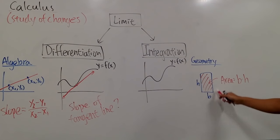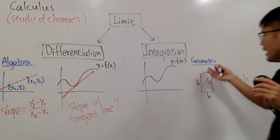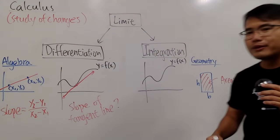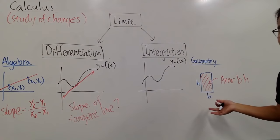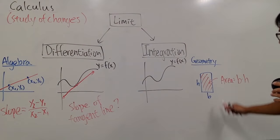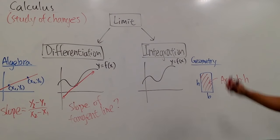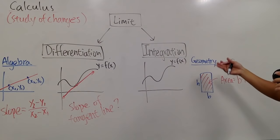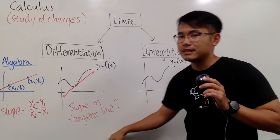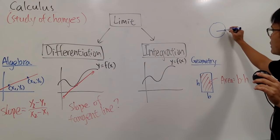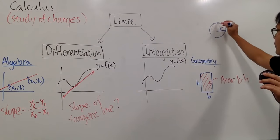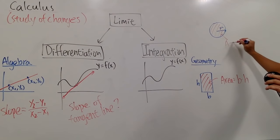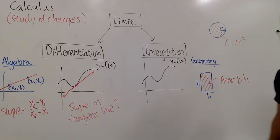Here is one of the easiest shapes — a rectangle, labeled with height and base. The area of this rectangle is simply base times height. We also have a circle with radius r, and the area of a circle is pi r squared.